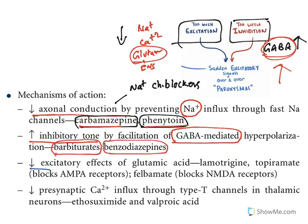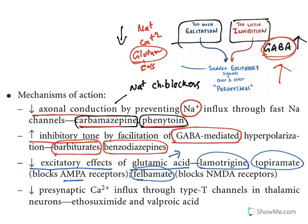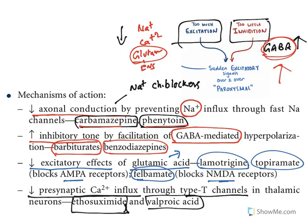The third mechanism is to reduce the excitatory effects of glutamic acid — an excitatory neurotransmitter. This can be achieved by drugs like lamotrigine and topiramate, which block the AMPA receptor, or felbamate, which blocks the NMDA receptor. The fourth mechanism is to reduce presynaptic calcium influx through T-type channels. Example drugs are ethosuximide and valproic acid.